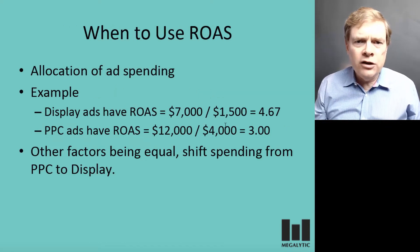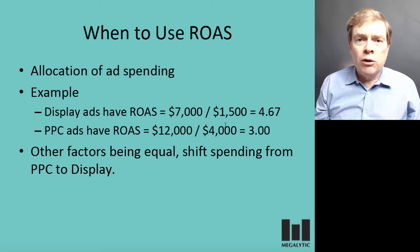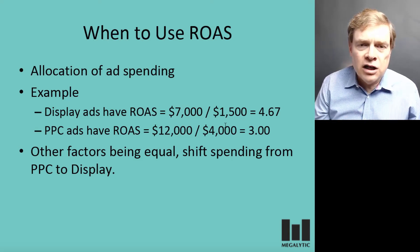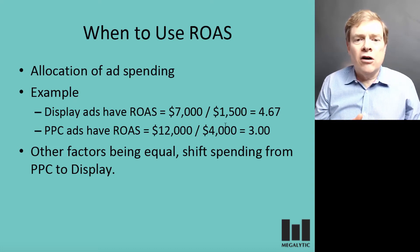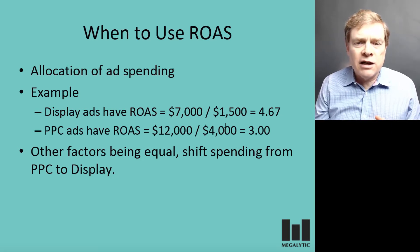When do you use ROAS? Primarily, ROAS is used for allocation of ad spending decisions. For example, let's say you do both PPC and display advertising and you're trying to decide how much to invest in each. Let's say display ads have an ROAS of 4.67 — you're spending $1,500 a month and getting back $7,000 in revenue.